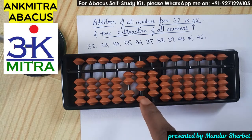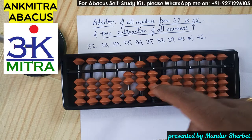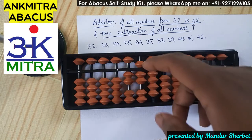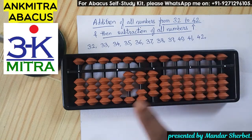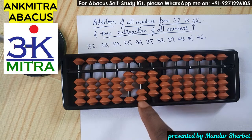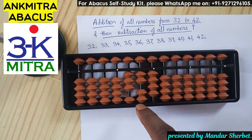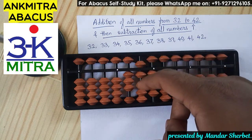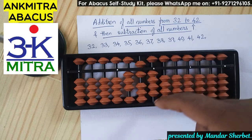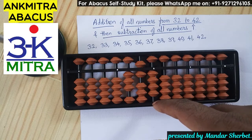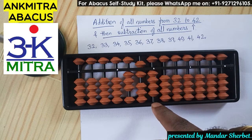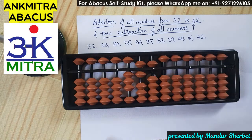Next number is 40. To add 4 on the tens place I use the big friend formula of 4, which is minus 6 plus 10. For 41, I add 4 on the tens place using the small friend formula — plus 5 minus 1. For the 1 on the units place, I use the small friend formula of 1 — plus 5 minus 4. Addition of 41 is done.